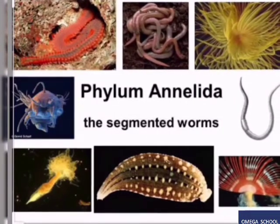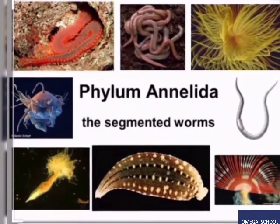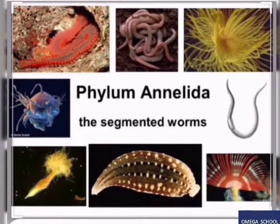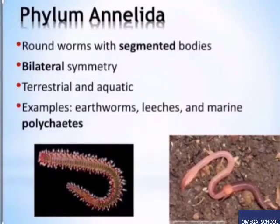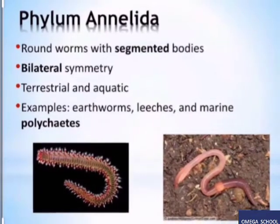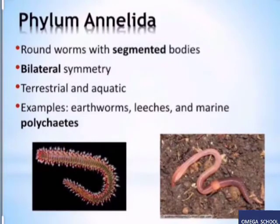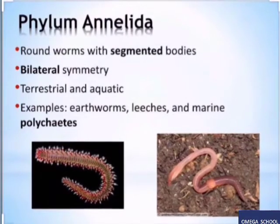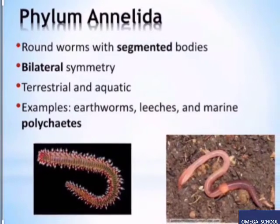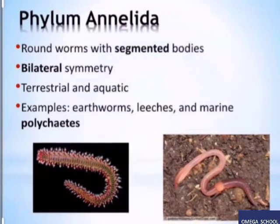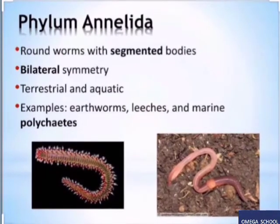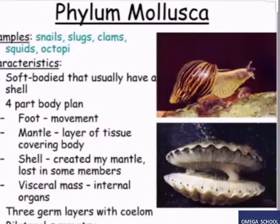The next one is the phylum Annelida — the segmented worms. Their body is divided into regular segments and they have a closed blood circulatory system. They are hermaphrodites, meaning they have both male and female sex organs. The best example is the earthworm, which is very important for increasing soil fertility.